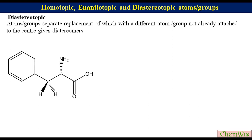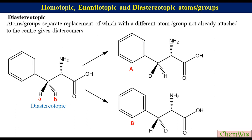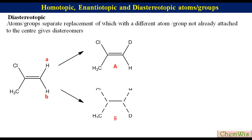For example, S-phenylalanine: The two benzylic protons A and B are diastereotopic because replacement of HA with deuterium gives structure A, while replacement of HB with deuterium gives structure B, which are diastereomers. In 2-chlorobutene there are two terminal alkynic hydrogens A and B. Replacement of HA with deuterium gives structure A and replacement of HB gives structure B. Since structures A and B are diastereomers, HA and HB are diastereotopic.